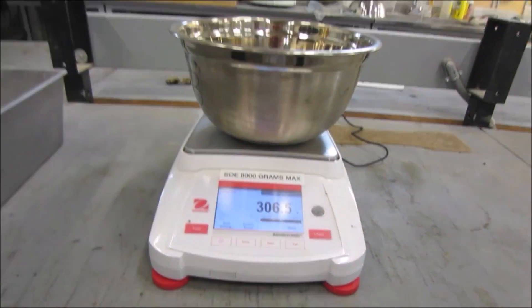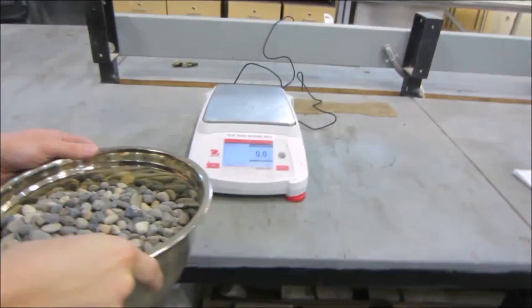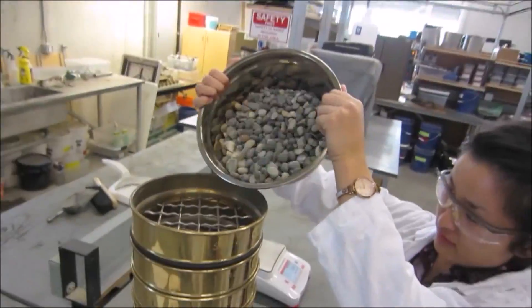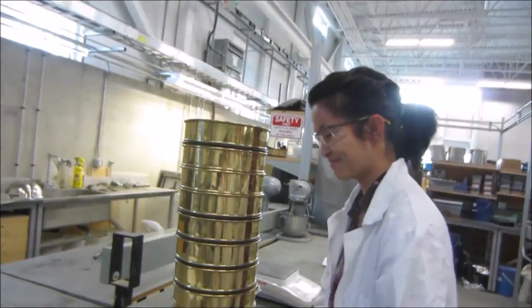Tare the measure, then weigh the sample and record its mass. Empty the aggregate sample onto the top sieve, then secure the lid.